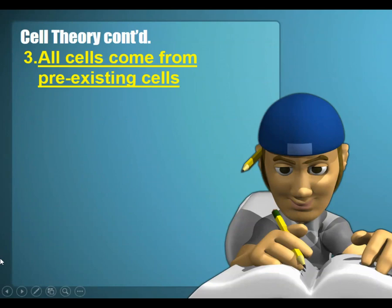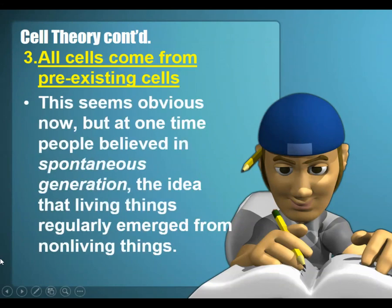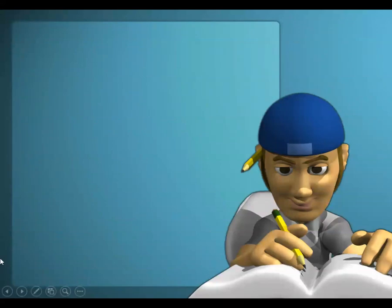The third part of the cell theory is that all cells come from preexisting cells. This does seem obvious now, but at one time people believed in something called spontaneous generation — the idea that living things just emerged from non-living things. But we know now that's not the case.